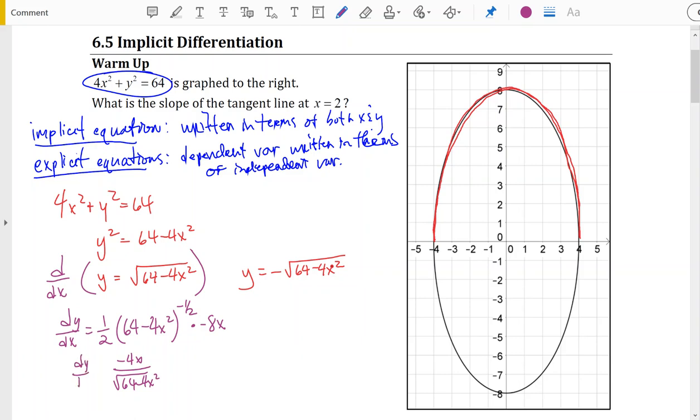And in order to calculate the slope we're being asked for when x is equal to 2, we'll plug 2 into this solution, giving us negative 8 over the square root of 48, which simplifies to negative 2 over the square root of 3.